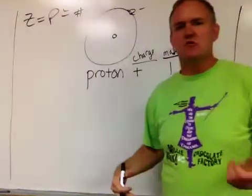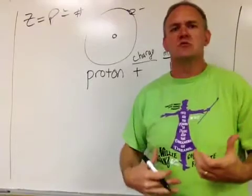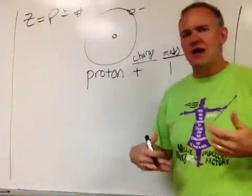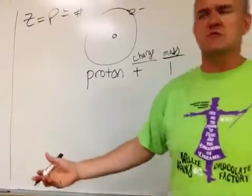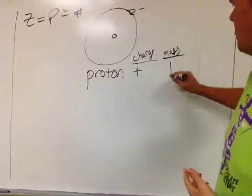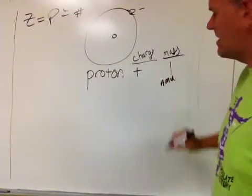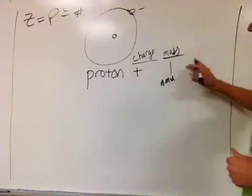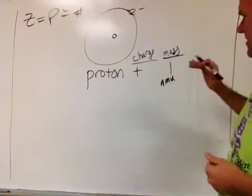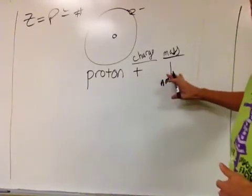Now we have this special unit that we invent just to weigh protons and neutrons because they're so tiny because if you weigh it out in grams, it's like point zero, zero, zero, zero, zero, zero, zero, you know, a bunch of zeros and you don't want to do that. So we invent this unit called the atomic mass unit, AMU for short, atomic mass unit. And that's what a proton weighs. And so protons have a positive one charge and they weigh one AMU.